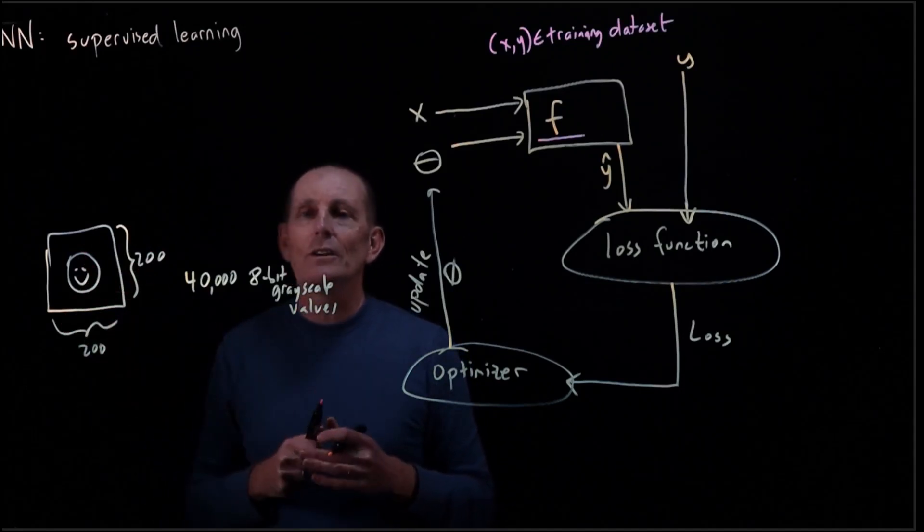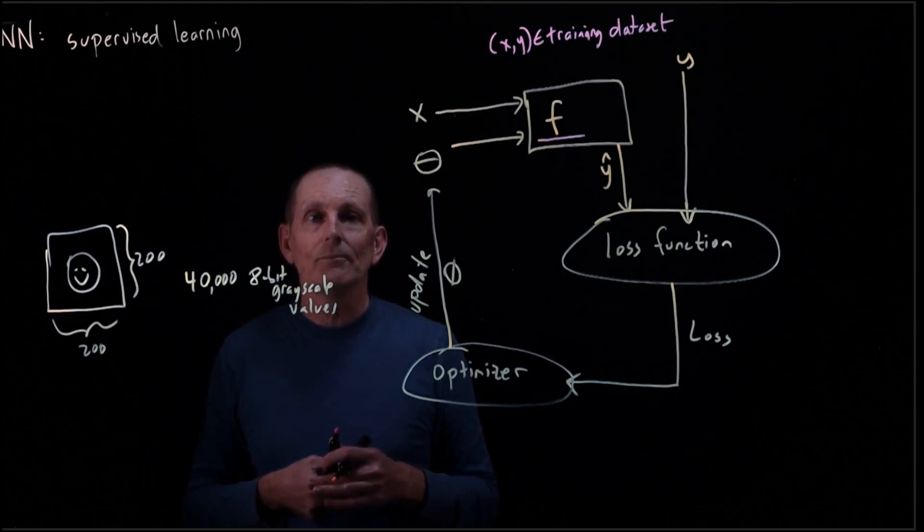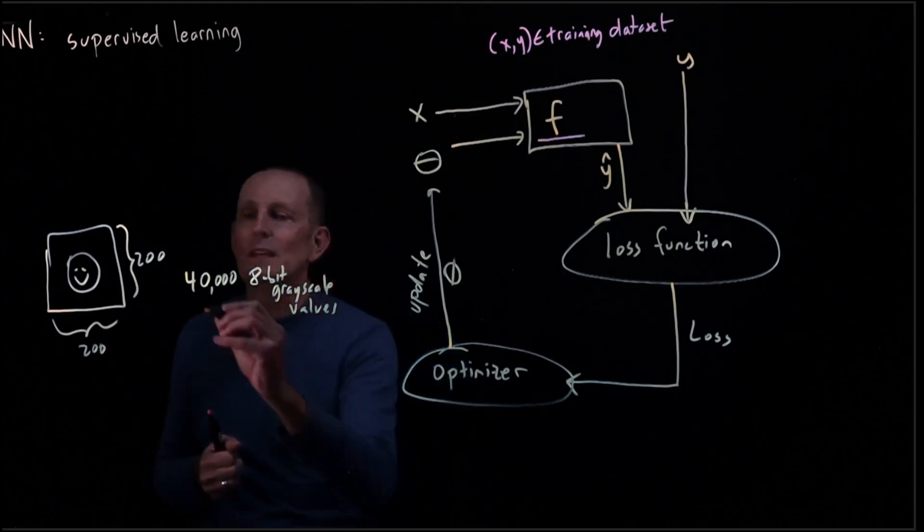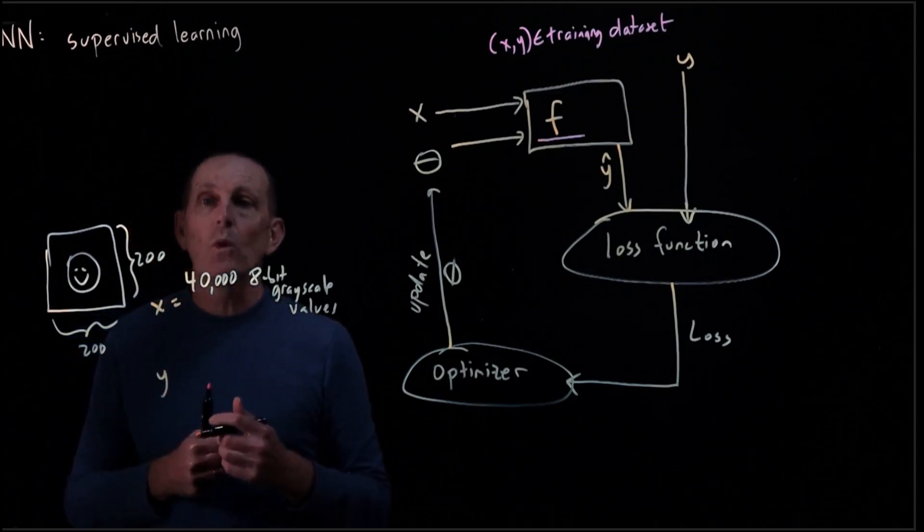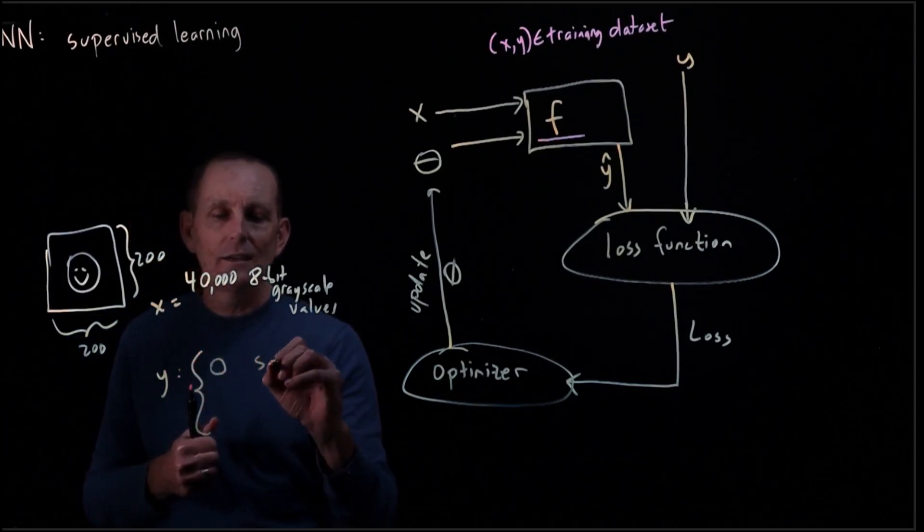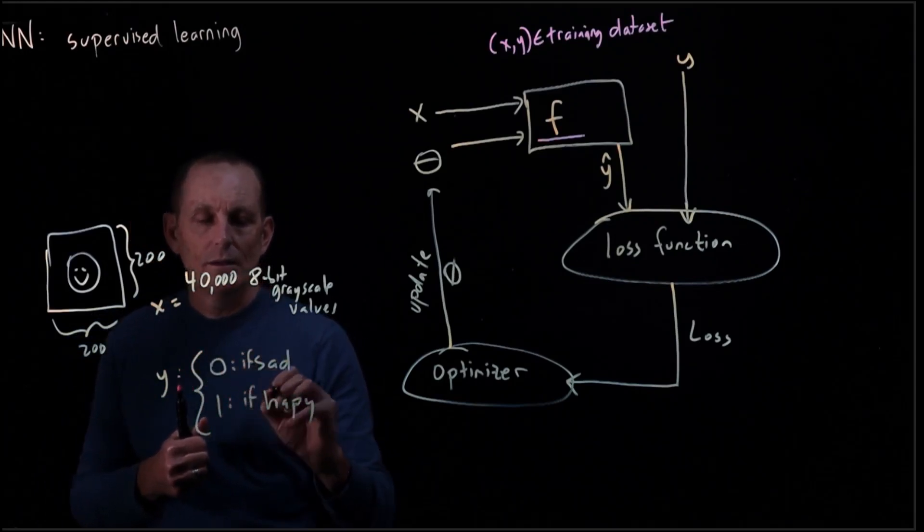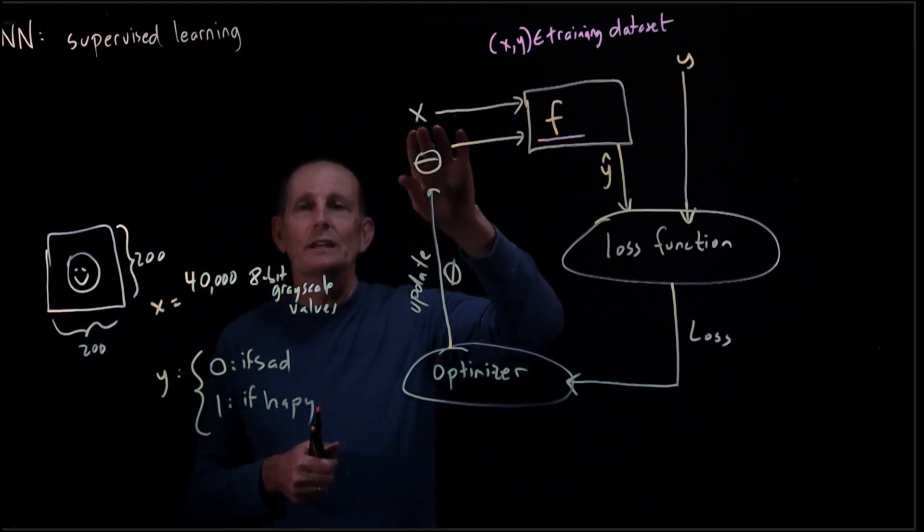We could choose to make it 100 by 100, 500 by 500. We could make it color if we wanted. So this would be the X, let's say. And then Y, perhaps we're going to make Y just be a 0 if it's sad, and a 1 if happy. That is part of what we get to design.